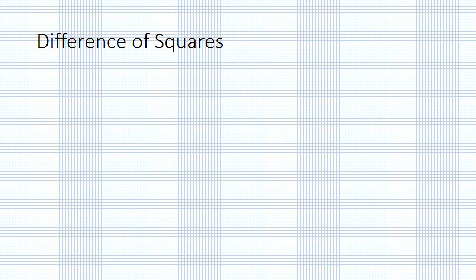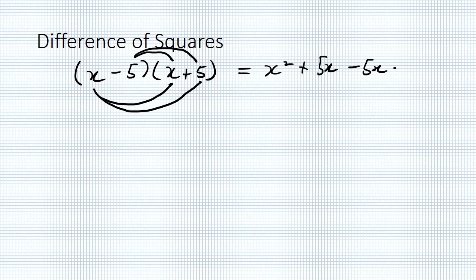Looking at a couple of special cases now. Difference of squares: (x - 5)(x + 5). We could do it using the same method, but we can do a shortcut. Notice here we've got a -5 and a +5. When we expand that out, we've got x² + 5x - 5x - 25. What happens is those two terms cancel each other out. That will always occur when we've got a difference of squares like this. So that gives us x² - 25, which you can write as x² - 5².